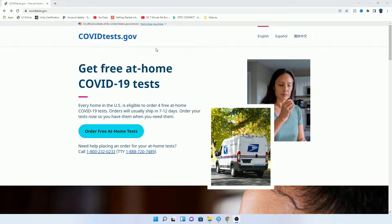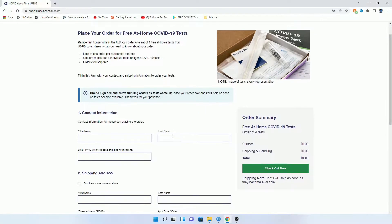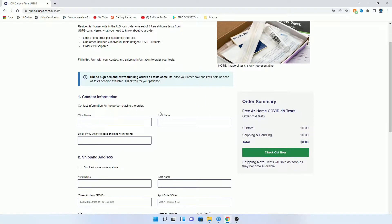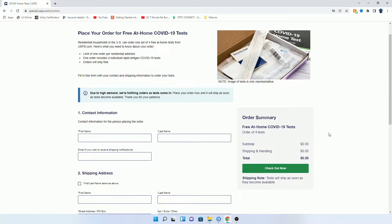All right, you just want to go to covidtest.gov and then click here on the order free at-home tests. That's going to bring up this page right here. You just put in your first name, last name, email if you want, and then shipping address, and then checkout. Now it's all free, so well, free to you.